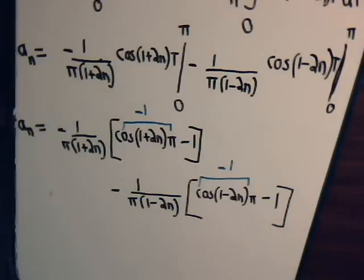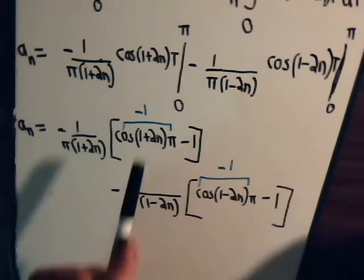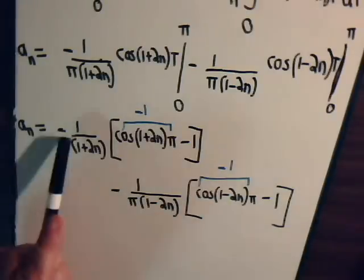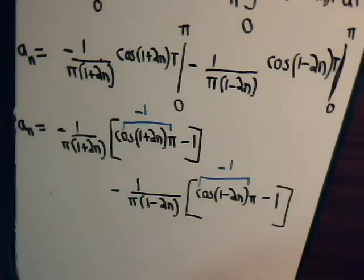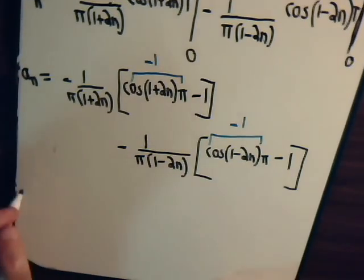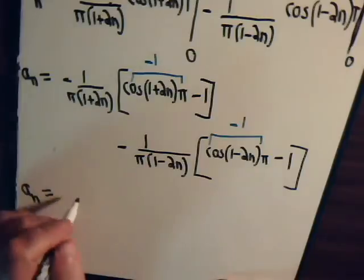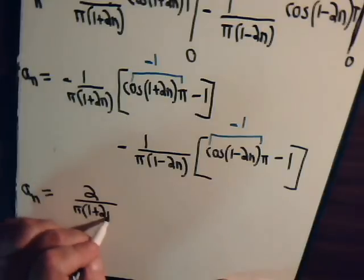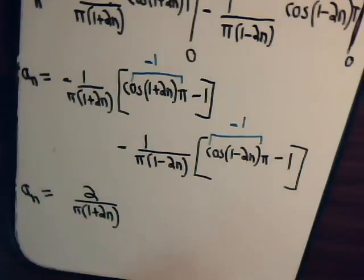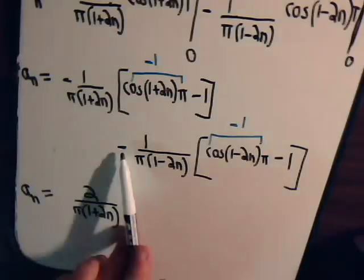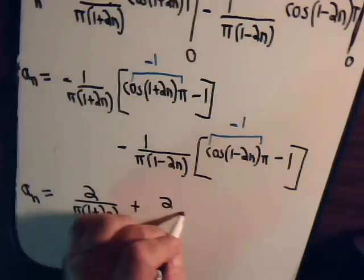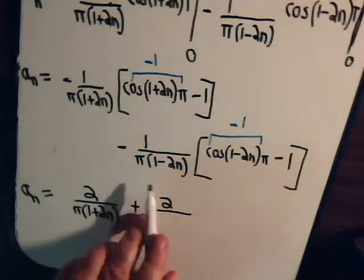So let's see what we have. Negative 1 minus 1 is negative 2. Here's a negative sign, that gives us plus 2. So a sub n is 2 over π(1+2n). This is negative 1 minus 1, that's negative 2, and we have another negative sign, so that's plus 2 over π(1-2n).